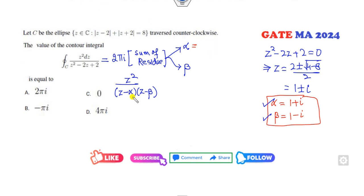This is corresponding to α: when you substitute z=α, it is α²/(α-β). Corresponding to β will be β²/(β-α). Finally, you can add them. The LCM is α-β, giving α²-β² = α+β. What is the value of α+β from here? 2. So the right answer is 2πi × 2 = 4πi.